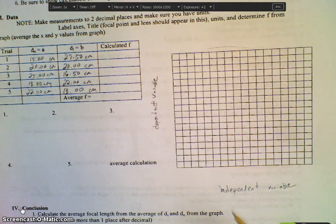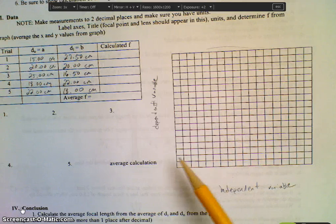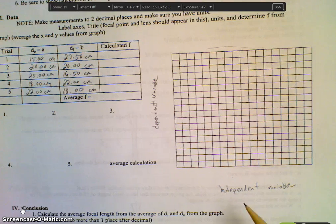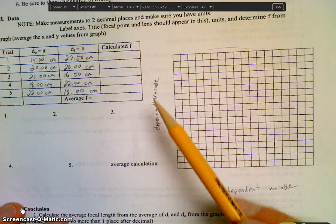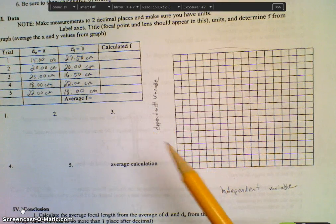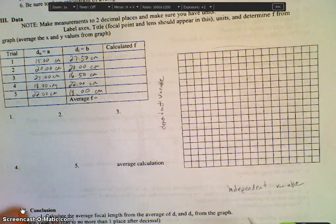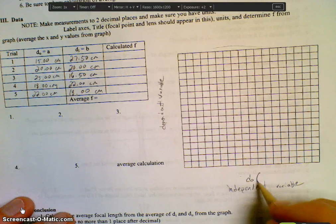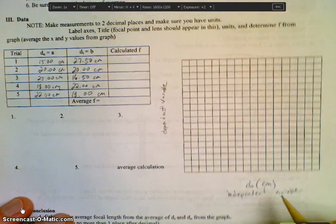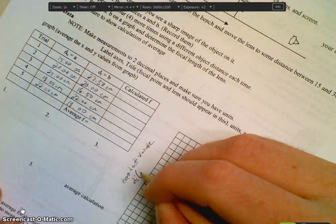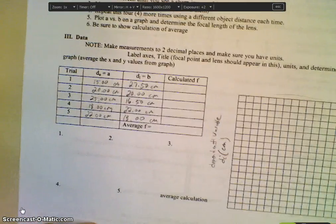So when we look at a graph, we have what's called the independent variable and the dependent variable. The independent variable is the variable that you are changing, and the dependent variable is the one that changes as a result. So the independent variable for us is DO, and it's measured in centimeters. And then our dependent variable would be DI, it's also measured in centimeters.